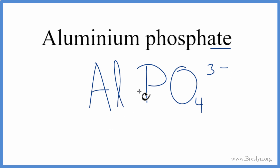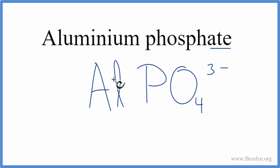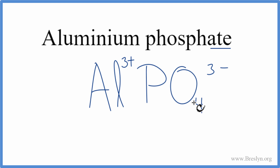Aluminum is a metal, and phosphate is made up of a group of nonmetals. So this is ionic, and the charges need to add up to zero, to have a net charge of zero. Aluminum, when we look on the periodic table, you'll see that's three plus. We said the phosphate is three minus, so three plus and three minus — that adds up to zero.